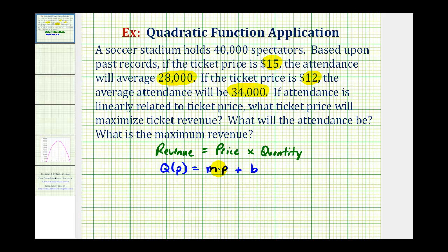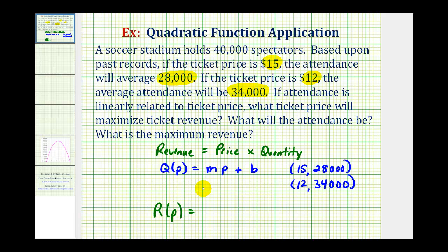We can find the equation of this function because it's linear, using the information given, where one point would be when the price is $15 and the quantity is 28,000, and the other point when the price is $12 and the attendance is 34,000. So once we find Q of P, we'll have the revenue function that we want to maximize. We will have R of P, the revenue function, equal to the price of the tickets times the quantity Q of P, which we can then maximize. Our first step is to find Q of P.